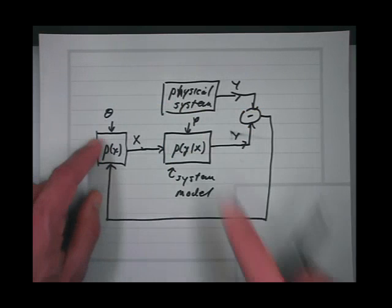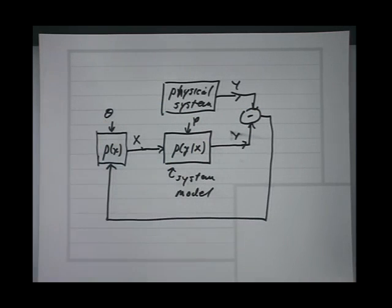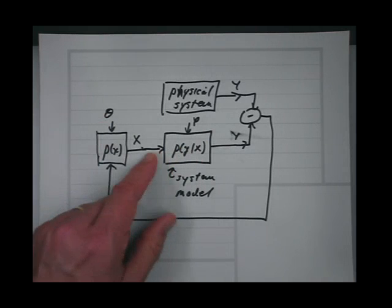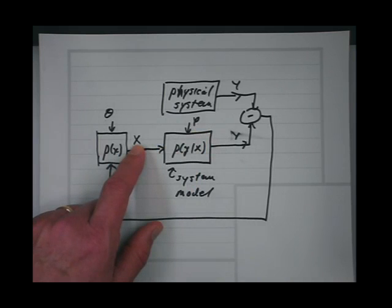I use green letters for the unknown parameters. It might be things that we don't really care about directly — not things we really need to know — but we need to know them because the thing we want to know, x, depends upon them.